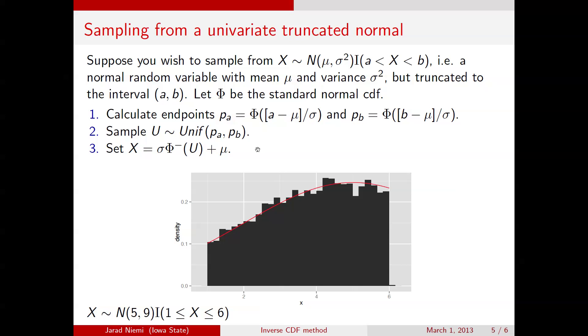And if we do this, this is what it looks like. In this case, we're using an untruncated normal with mean 5 and variance 9, but truncated to be between 1 and 6. Again, the histogram are the actual realizations of doing this procedure. And the red line is the true probability density function for this truncated normal.